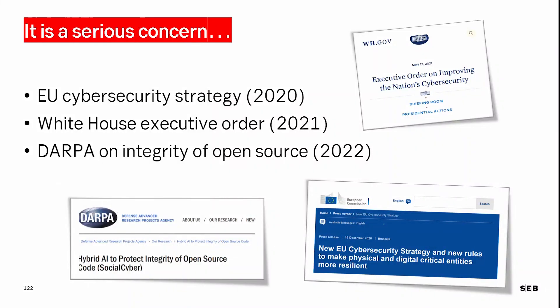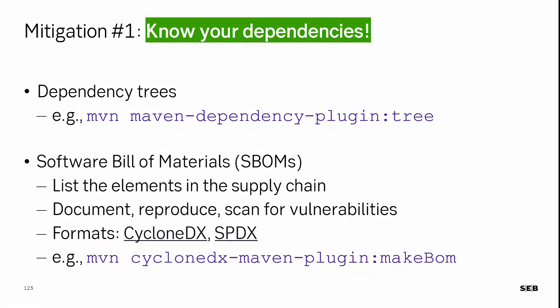This is a serious concern, and there are many cybersecurity strategies being adopted. The White House Executive Order in 2021, following SolarWinds, recognized the need to take action against software supply chain compromises. Open-source software security has become very important. The EU Cybersecurity Strategy in 2020 is another example showing that governments are taking the securing of software supply chains very seriously. The question is: what can we do? I will give you three strategies.